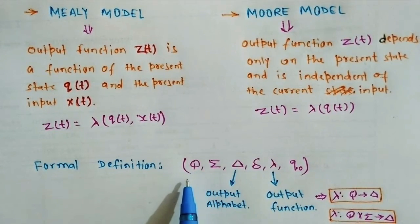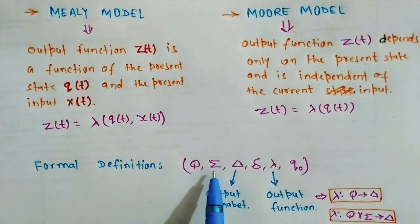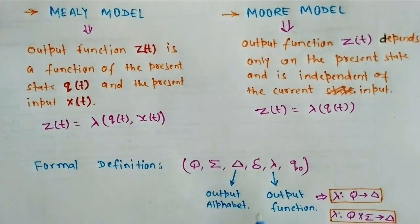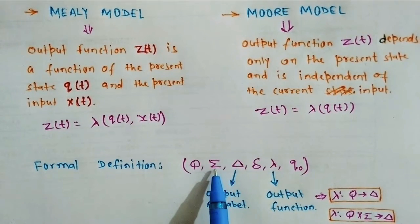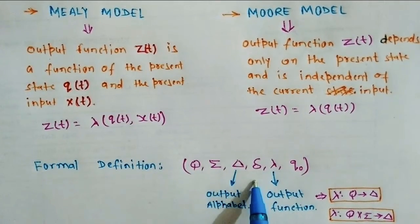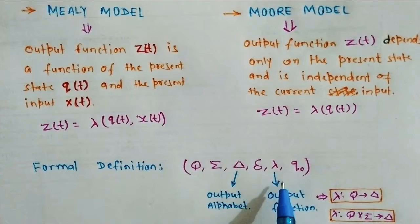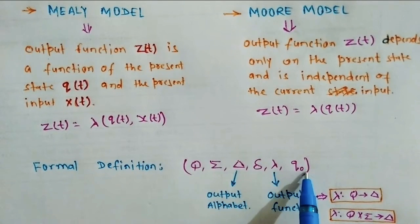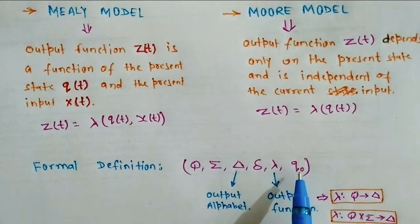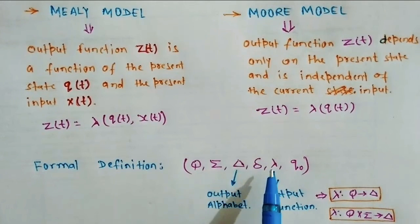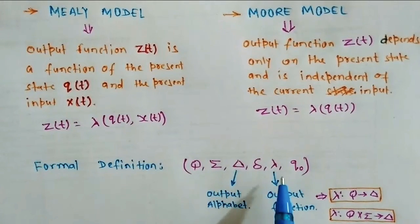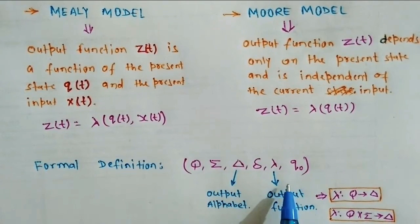Q represents the finite set of states. The next component is the finite set of input alphabets. The extra tuple is the output alphabet — you have several input alphabets and the machine generates some output alphabet. Then there is the transition mapping function, the output function, and the initial state. There is no role of a final state here. In finite state machines without output, several final states exist, and if the machine halts on a final state, the particular string or language is accepted. But here there is no final state.